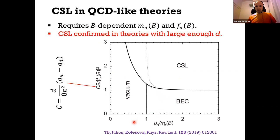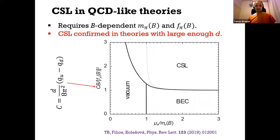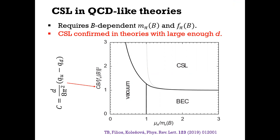The conjecture was that as long as your theory doesn't have a sign problem — i.e., the determinant of the Dirac operator is positive — you cannot have an inhomogeneous phase in the phase diagram. This would be a very interesting no-go theorem relating the absence of the sign problem to the breaking of translation invariance. However, I can tell you that the conjecture is now disproved. This is work done together with my PhD student Georgios Filios and Helena Kolešová.